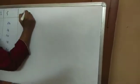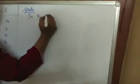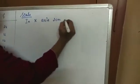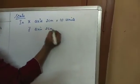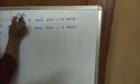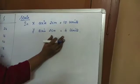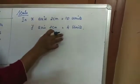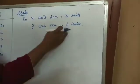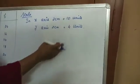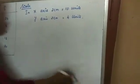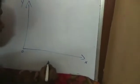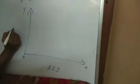Scale: in x-axis 2 cm is equal to 10 units and y-axis 2 cm is equal to 4 units. The scale you can take as you like. It is not compulsory that what I have taken same you have to take. You can take 5 also. And class interval, actual class interval along the x-axis. So this is X and Y, 0.